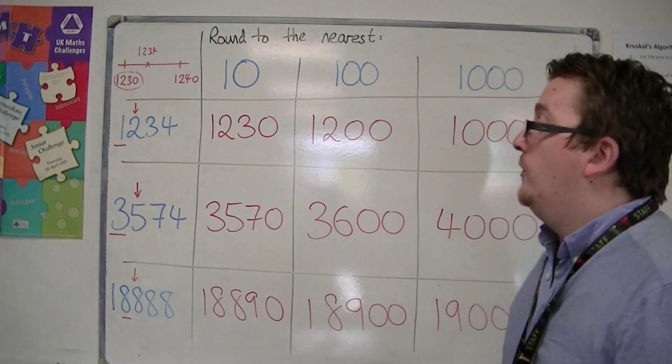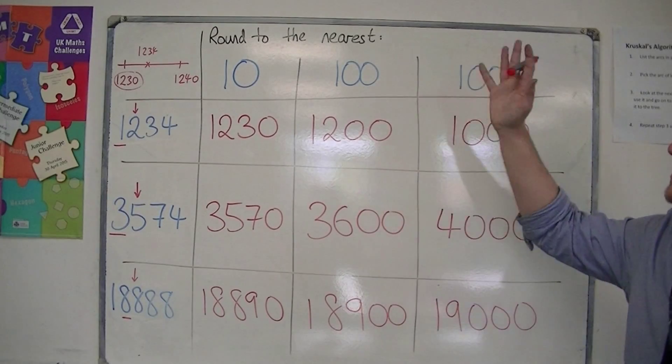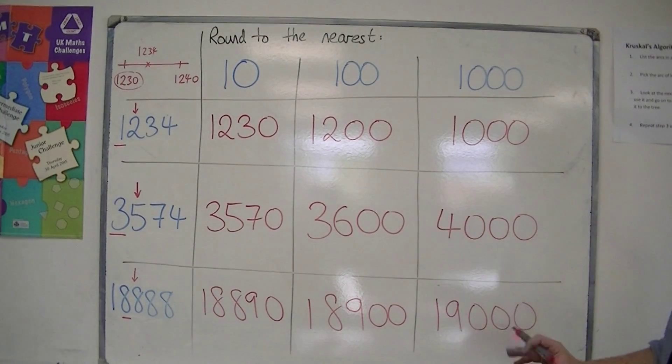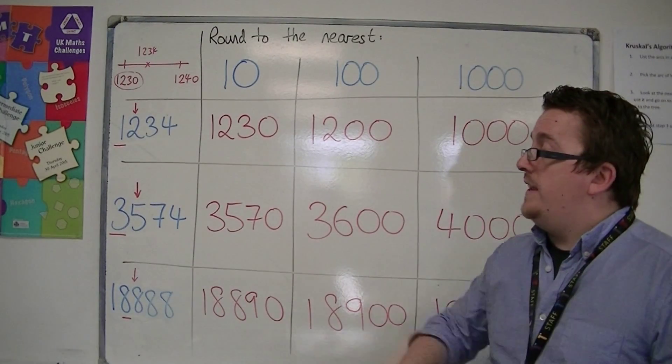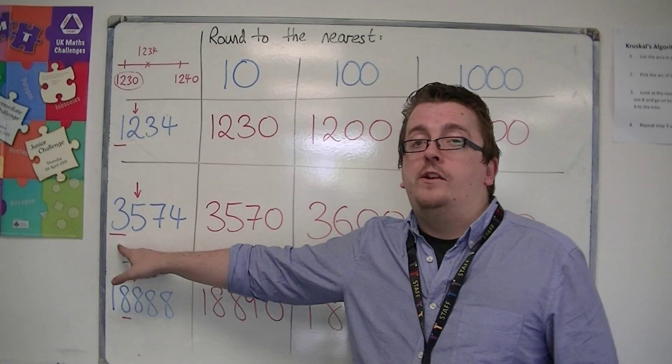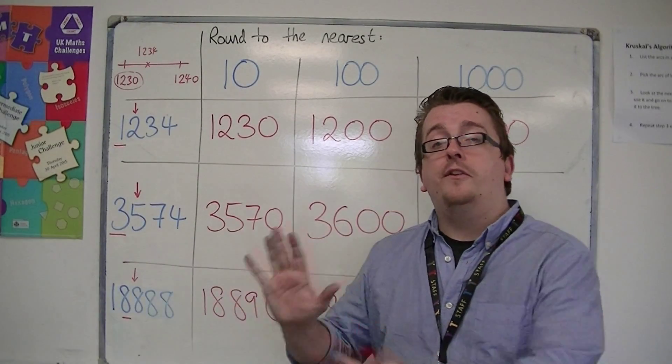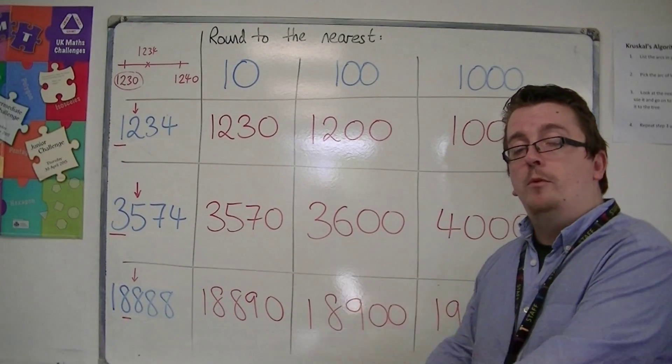Okay, so here have been three examples of numbers that I've rounded to tens, hundreds, and thousands. And it's always identifying the correct place value and looking one to the right to decide whether you need to round up or round down.